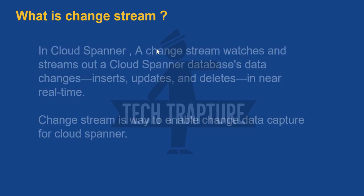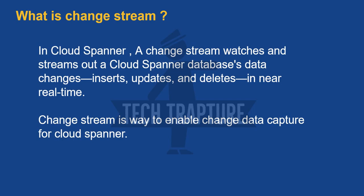First we'll see what a change stream is in Cloud Spanner. In Cloud Spanner, a change stream watches and streams out Cloud Spanner database data changes — inserts, updates, and deletes — in near real time. A change stream is a way to enable change data capture in Cloud Spanner. That's the typical definition.